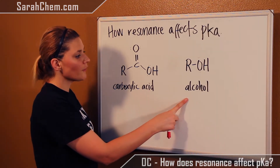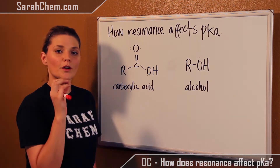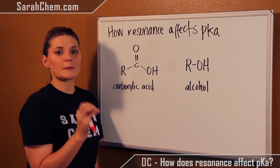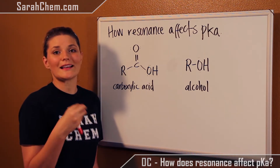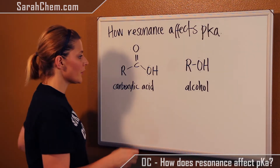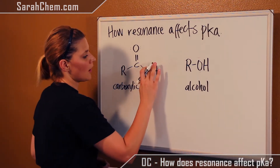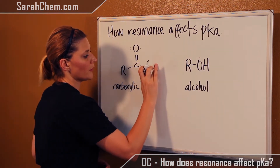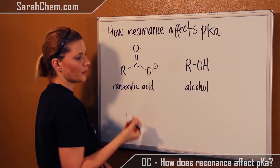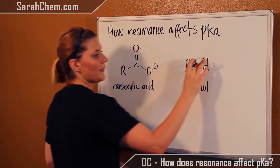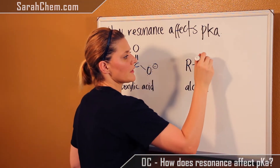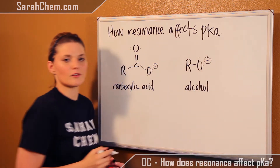What we're going to first do, as always, is focus on the atom that's going to be losing the hydrogen and thereby gaining the negative charge. In this case, this oxygen would lose this hydrogen and get a negative charge, and this oxygen here would lose the hydrogen and develop a negative charge.